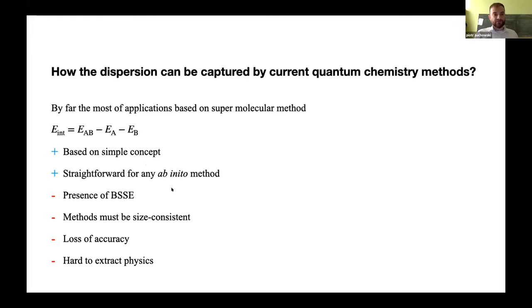However, the main disadvantages of this method are that there is a presence of BSSE, basis set superposition error. So, the methods which we use must be size consistent. We have the loss of accuracy because we subtract from each other the energies which are much larger than interaction energy itself. So the interaction energy can be smaller from the dimer energy by orders of magnitude, by like 6 orders of magnitude. And basically, this is hard to extract physics from that.